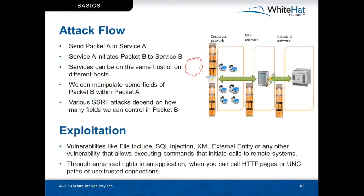Looking at the diagram, it's a three or even four-tier network. You have everybody outside the corporate network, and if you try to connect into corporate devices, you really can't because a firewall will prevent you. But if you can get that little server in the center — the port 80 server, or the mail server, or whatever — to take a request from you and forward on another packet internally, that's what you're looking for. You send packet A to service A, your vulnerable server, and then service A initiates packet B to service B — your real intended target — which might be on the ERP network or the industrial network. The variance of the attacks comes from being able to manipulate some or all of the fields in packet B from packet A, so the first request you send is able to modify what the server sends on from there.